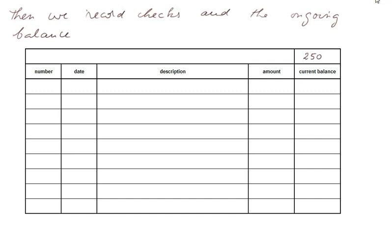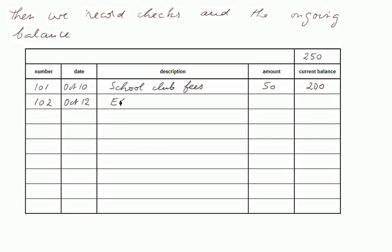Suppose the previous balance was 250 euros. Check number 101, written on October 10th, was for school club fees — 50 euros — giving a new balance of 200 euros. Check 102, on October 12th, is payment to the electric utility company for electricity: 23 euros, leaving a new running balance of 177 euros.